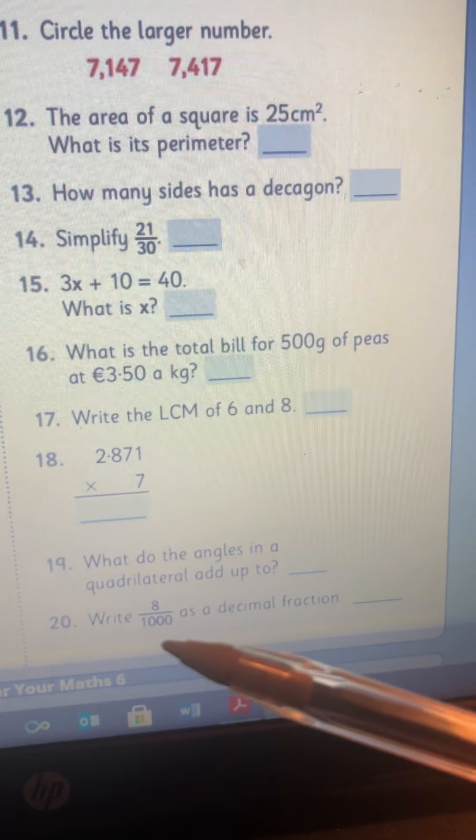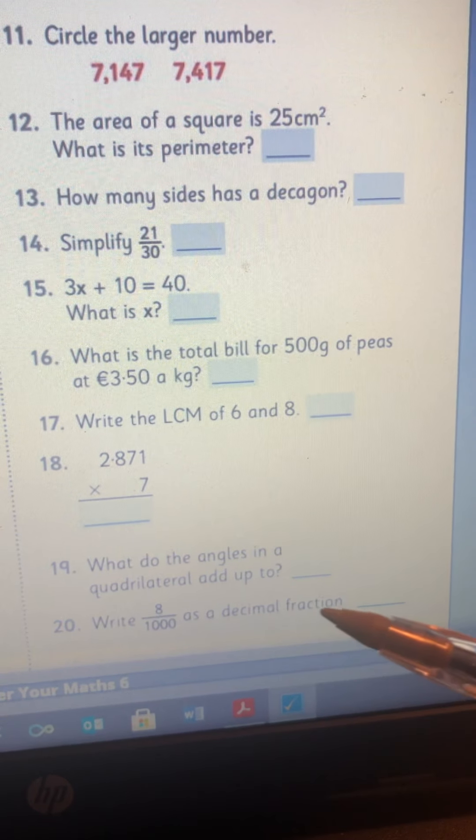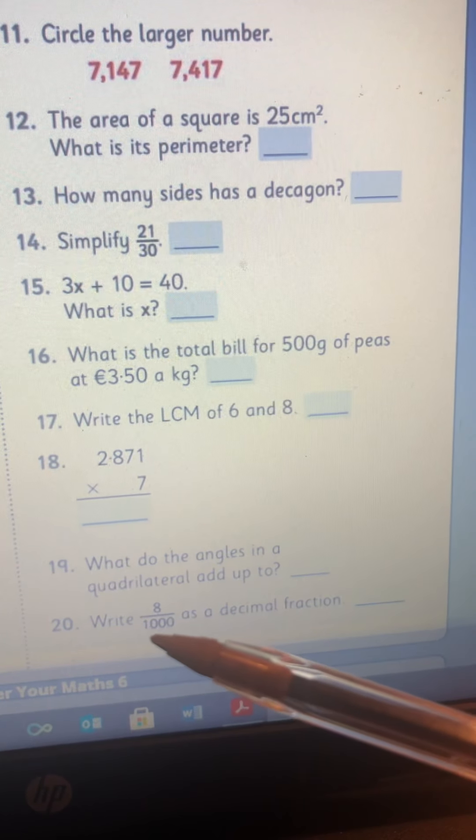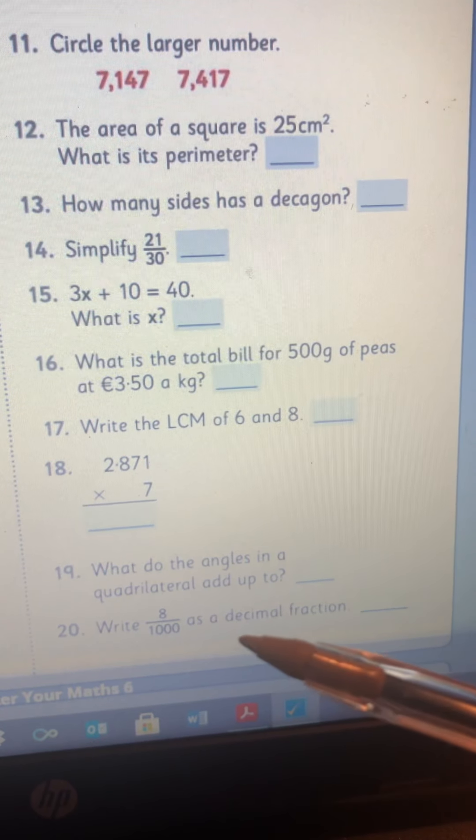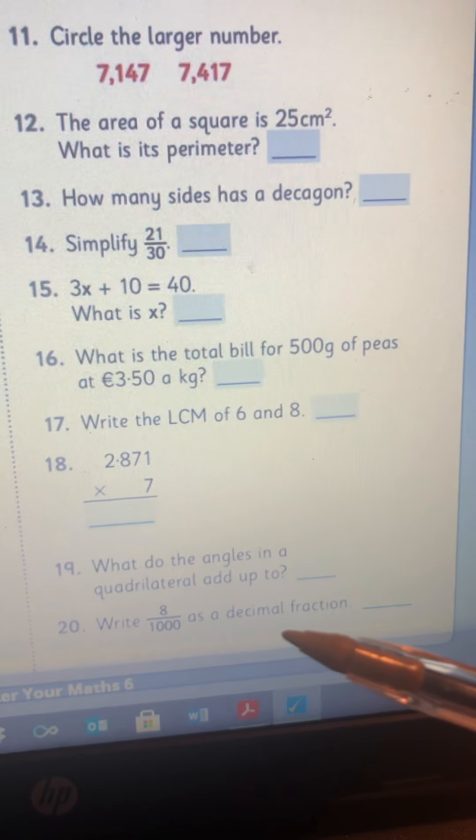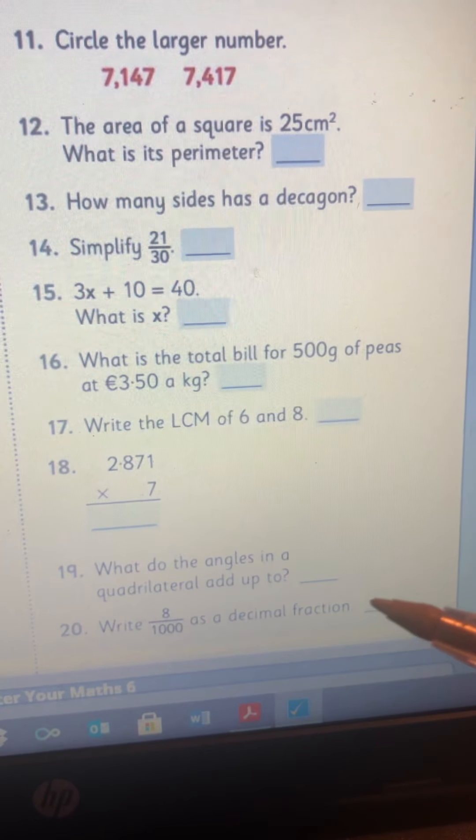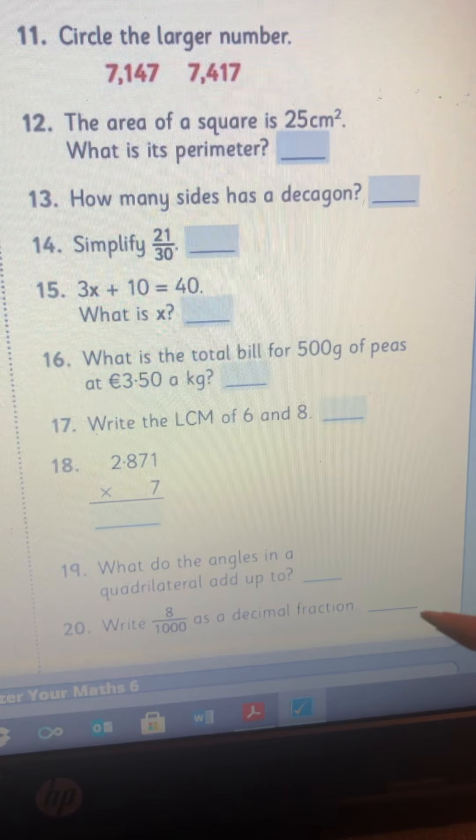And number 20, write 8 over 1000 as a decimal fraction. So there are three zeros in 1000, so there needs to be three decimal places in your answer. So zero point something something something.